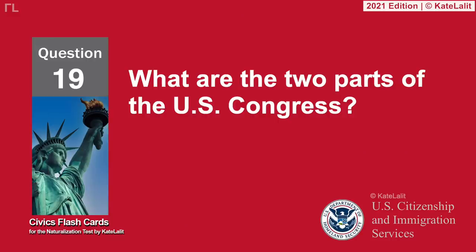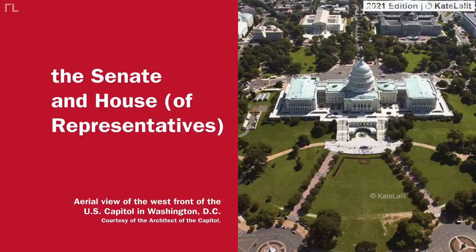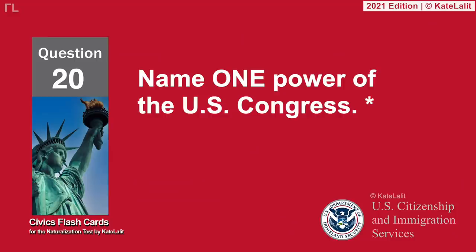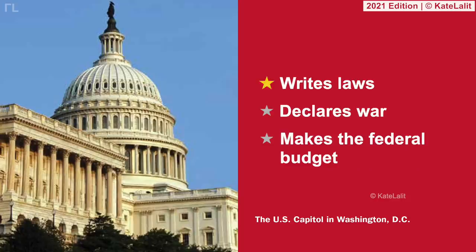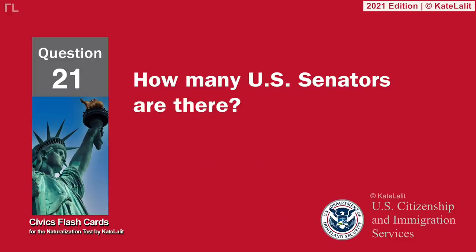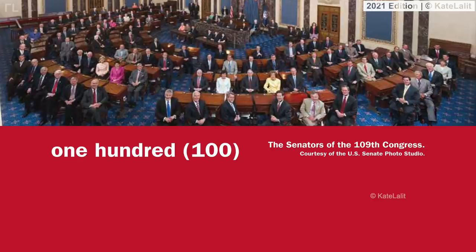What are the two parts of the U.S. Congress? The Senate and the House of Representatives. Name one power of the U.S. Congress: Writes laws, Declares war, Makes the federal budget. How many U.S. Senators are there? One hundred.